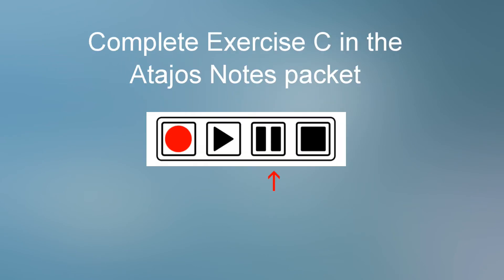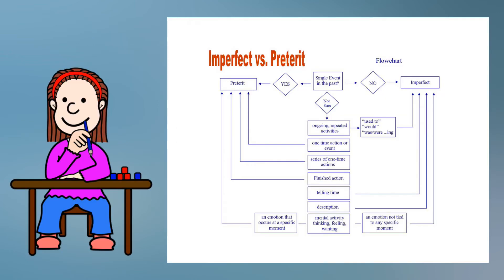Pause the video and complete exercise C in your Atahos notes packet. Unpause when you're ready to continue. Using the flowchart we have given examples of verbs that express repeated or ongoing actions, one-time actions, and finished actions.